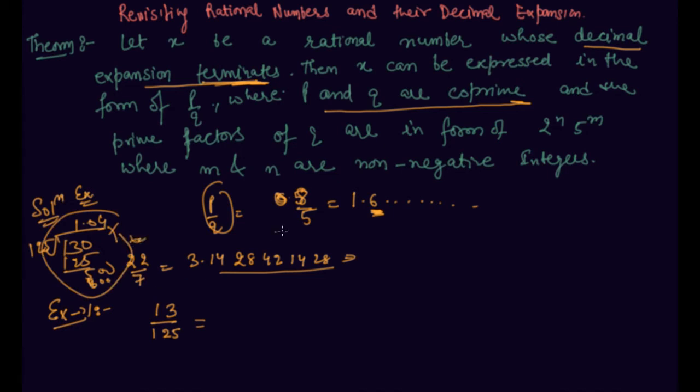According to this theorem, you have to express the denominator in the form of p by q. So what I will do here, I will write this as 13 over 5 raised to power 3. I have to express the denominator in such a way that it becomes 2 raised to power m into 5 raised to power n.